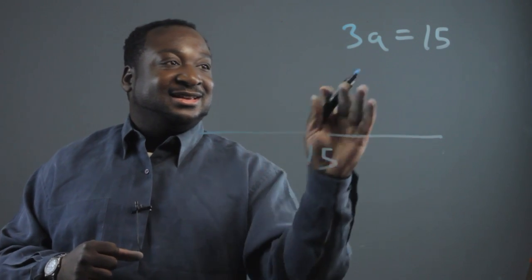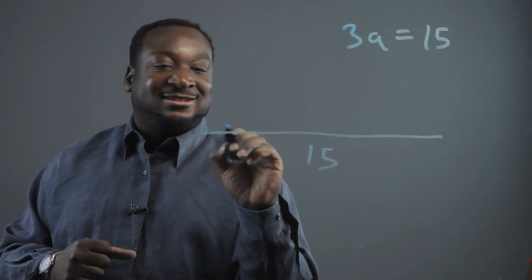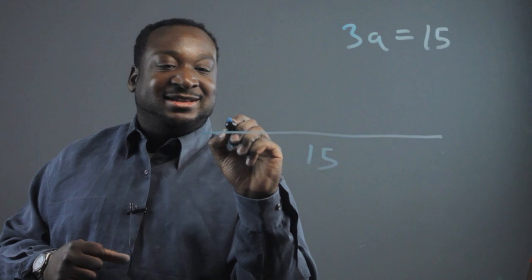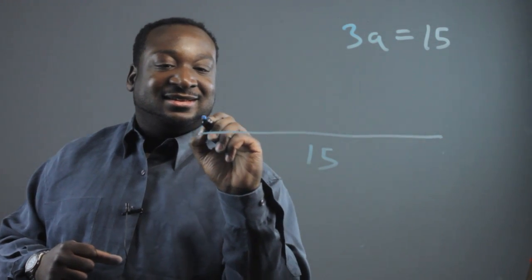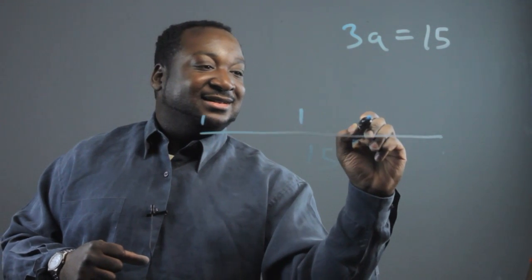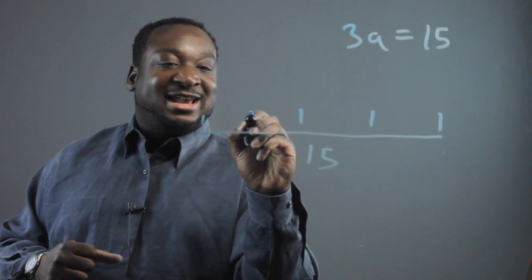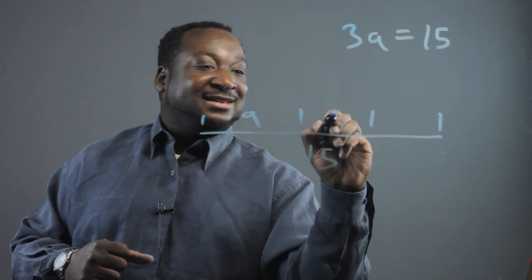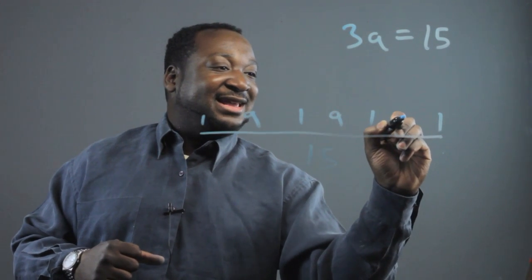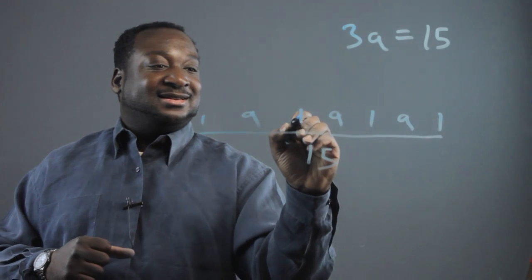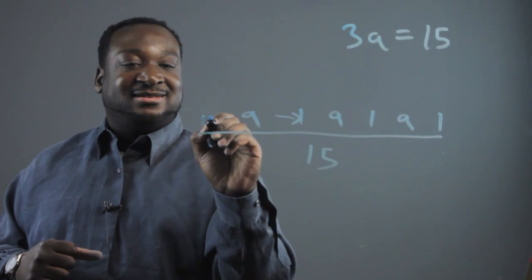15 into 3 parts and we have 1, 2, 3 and we have a, a and a from here to here.